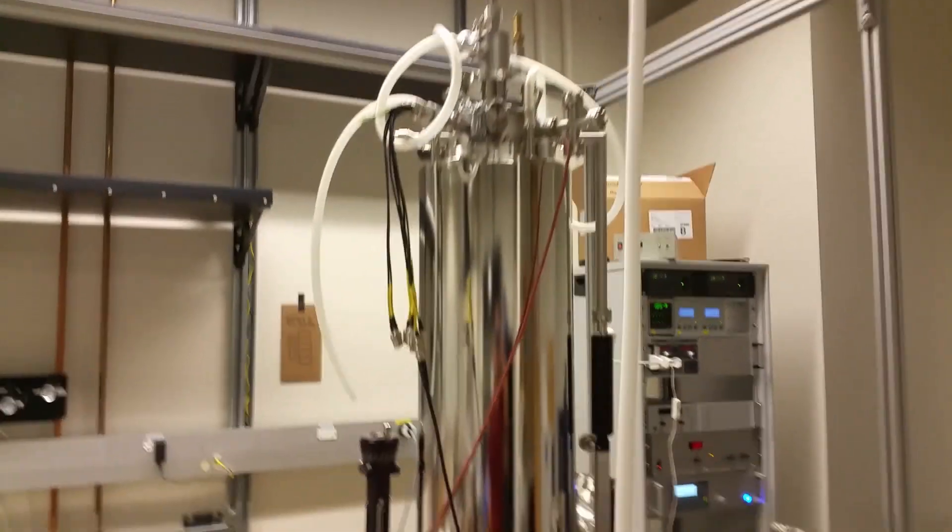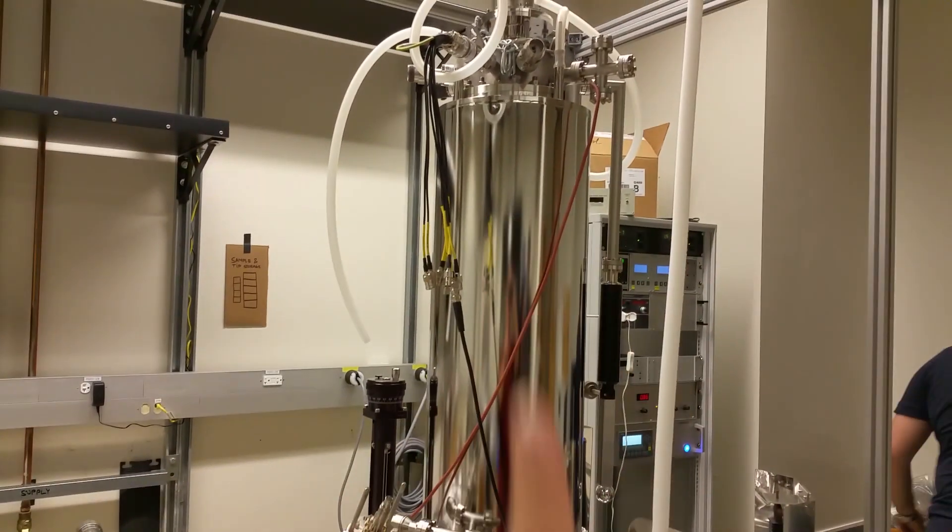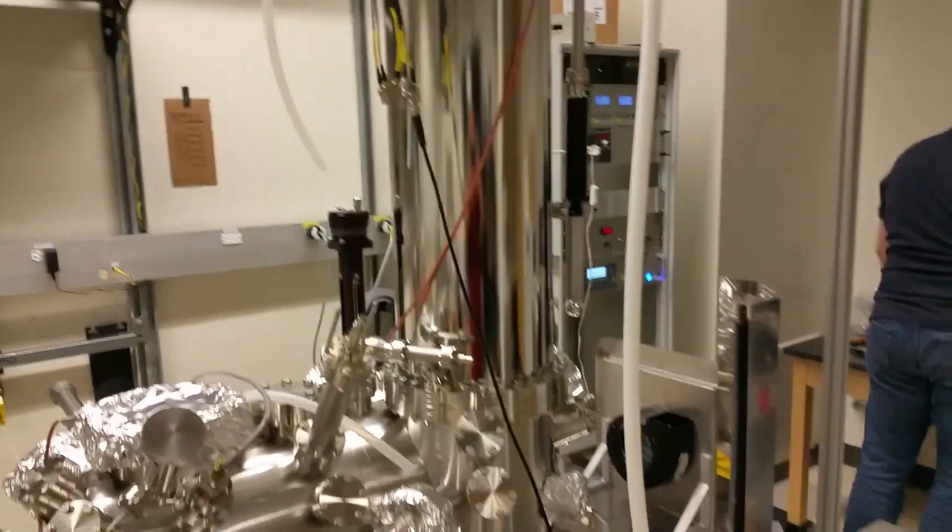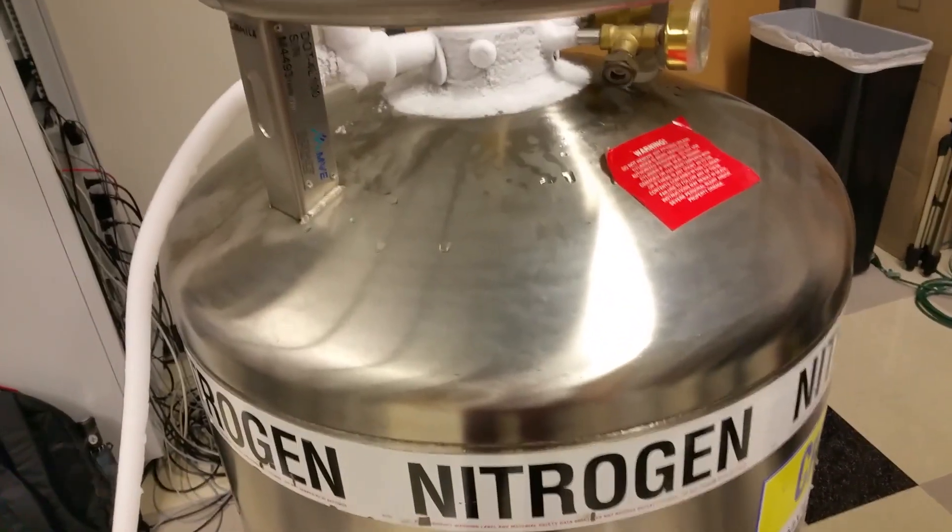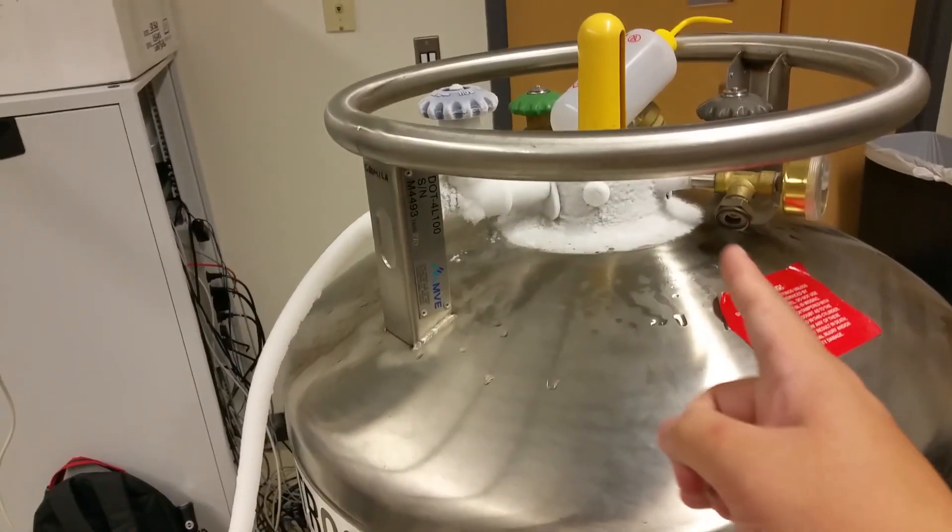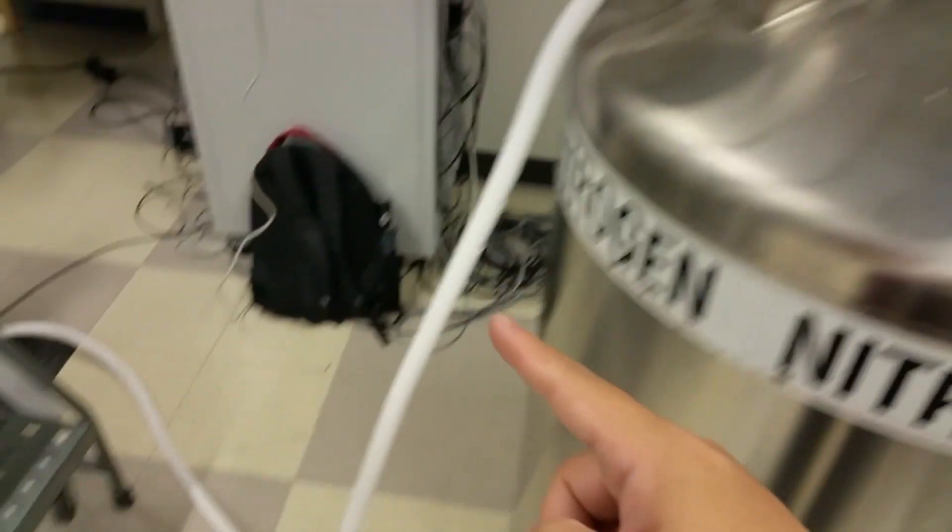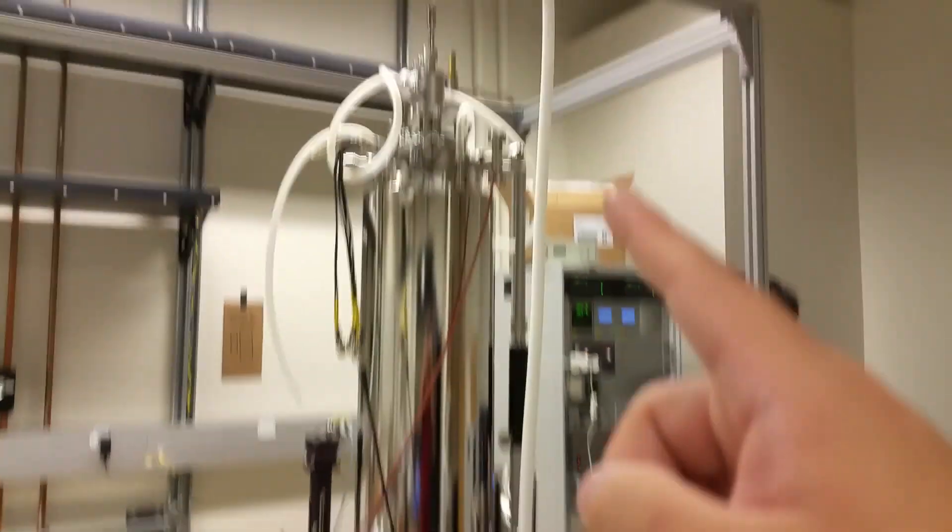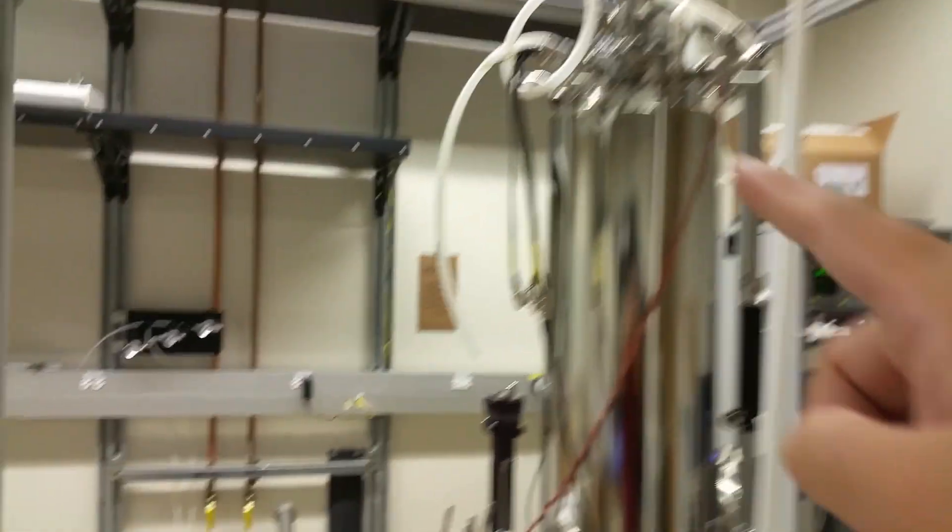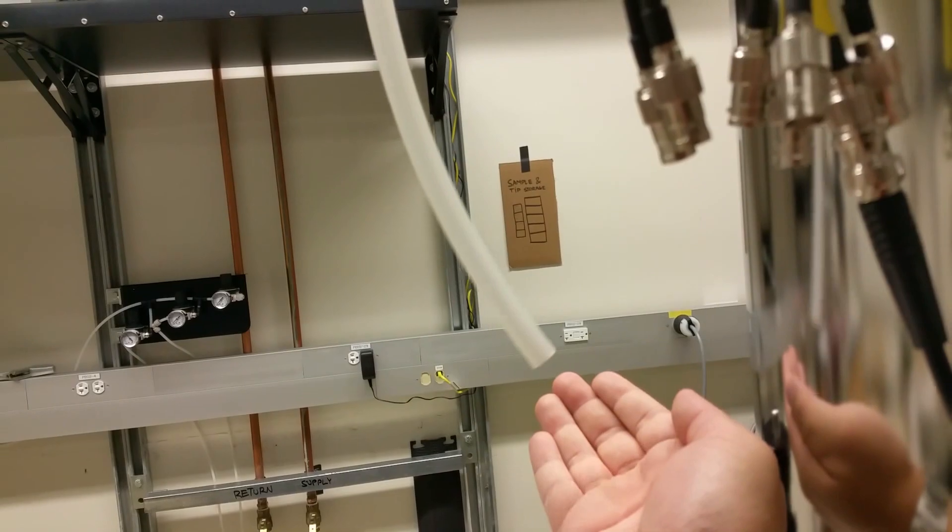We just took down the tent for the bake-out, so now we're cooling the chamber with cold nitrogen gas. Here is a tank of liquid nitrogen and there's cold gas coming out of here. You can see the lines frozen, and it goes up into the warm chamber and the gas comes out here warm.